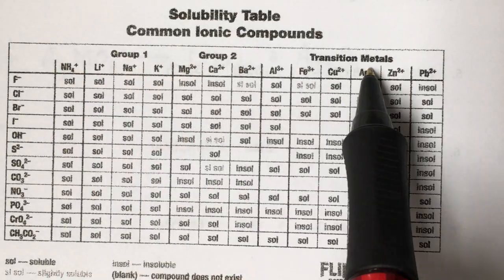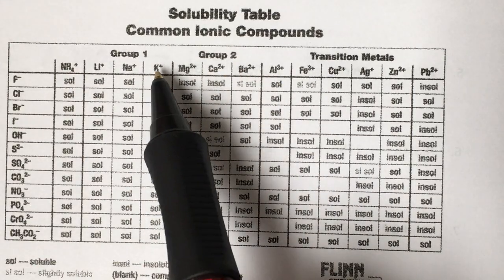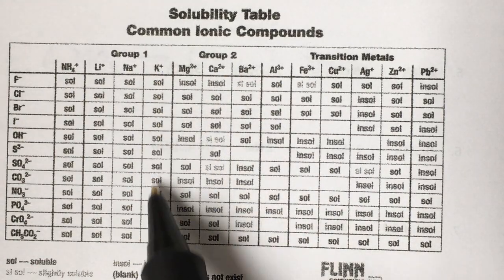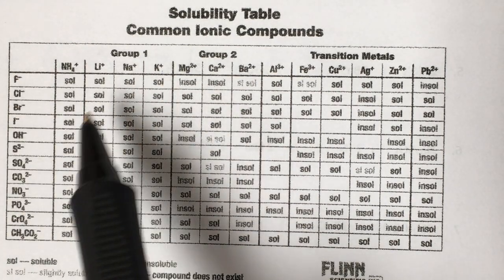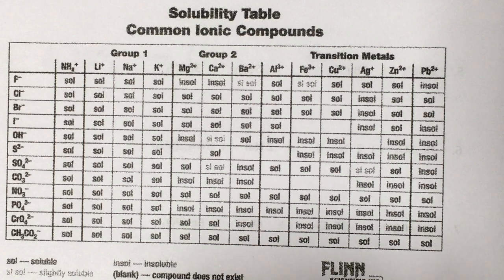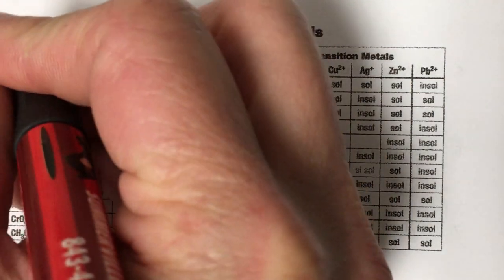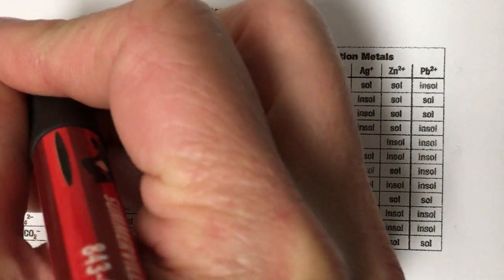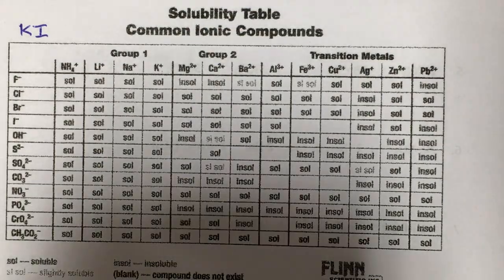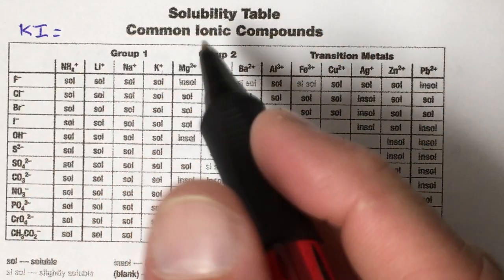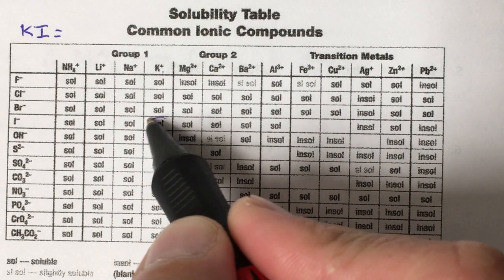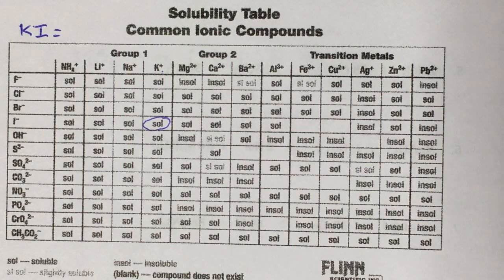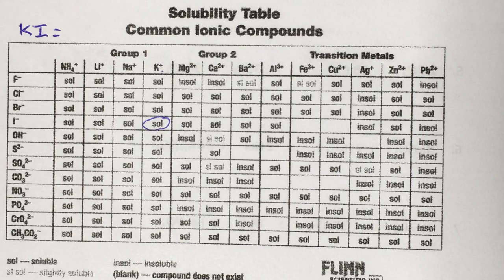What you do is you find your ion across the top. So we were working with potassium. This would be potassium's column. And then you find your negative ion down the side. So let's say we were doing the combination of potassium and iodine, KI, potassium iodide. Again, we would find potassium across the top. We would come down to the iodine row. And we see in here it says SOL. That means soluble.